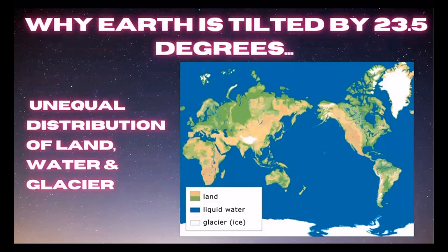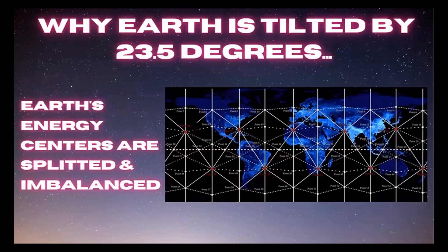The unequal distribution of land, water, and glacier causes Earth to be tilted. Additionally, there are many energy centers — 13 of which are major energy centers of the Earth — and these energy centers are split and imbalanced. This is one of the other reasons why Earth is tilted by 23.5 degrees.